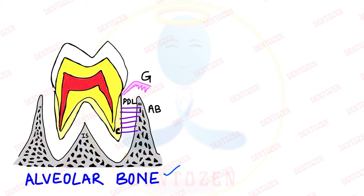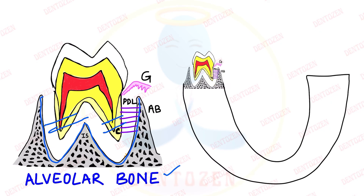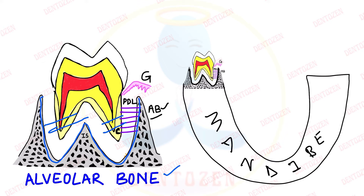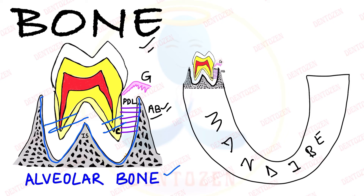Alveolar bone is the supporting structure of the tooth which forms the socket of the tooth — that is the place where the roots of the teeth lie. It is the bone which is actually part of a bigger bone: in the case of mandibular teeth this alveolar bone is part of the mandible, and in case of maxillary teeth it is part of the maxilla. To understand alveolar bone, first we need to understand the different types of bone and how it appears under the microscope.